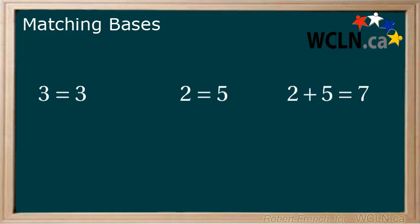3 equals 3 is true. 2 equals 5, false. 2 plus 5 equals 7, true.